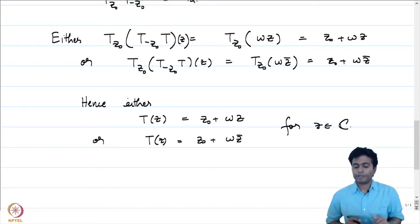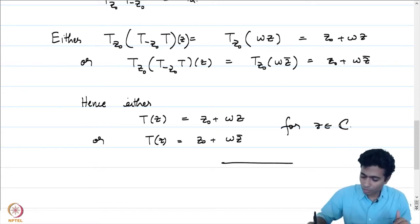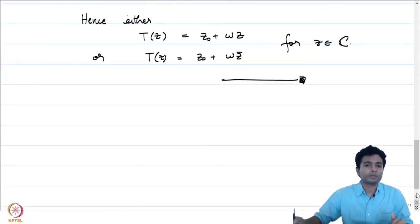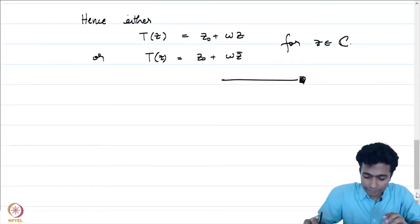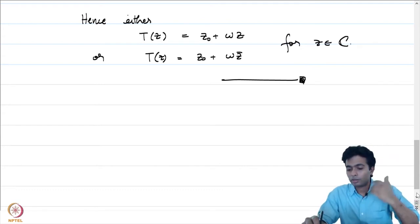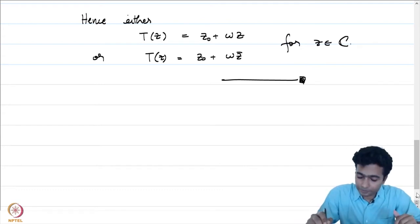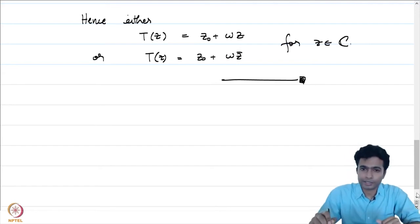So we have given a complete characterization of all the isometries of the complex plane. It will be a rotation followed by a translation.